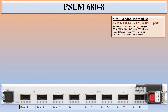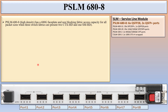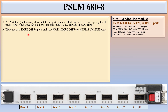There is a combination of 6 ports and 2 ports: 6 ports are QSFP28 and 2 ports are QSFP+. PSLM 680-8 high density has a 680G faceplate and non-blocking fabric access capacity for all packet sizes when 3 switch fabrics are present — 2 CTX HD and 1 SM HD. There are 2 x 40 GB QSFP+ ports and 6 x 40 GB or 100 GB QSFP28 ports.